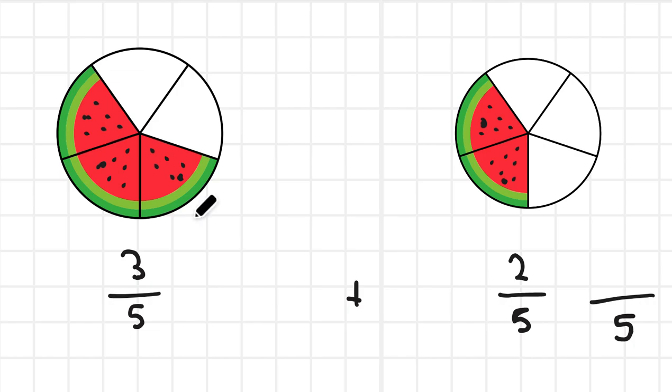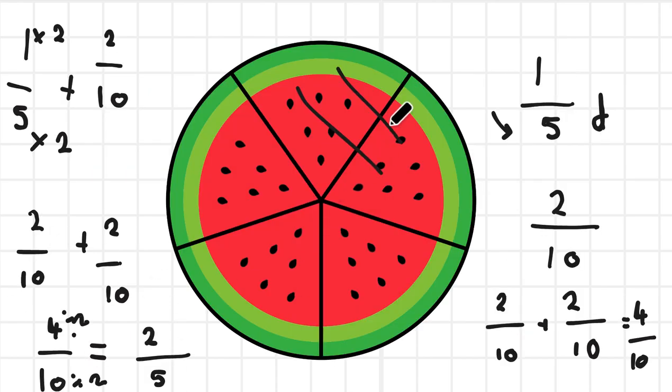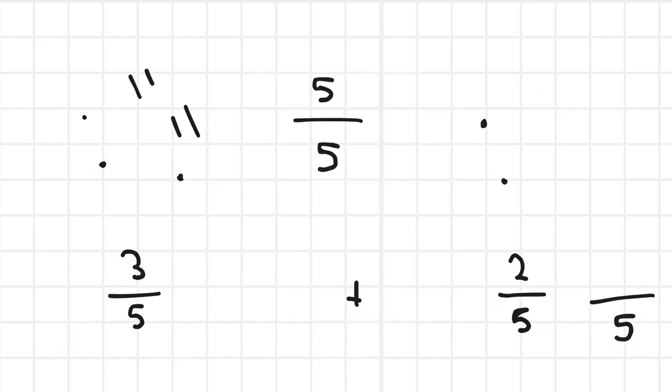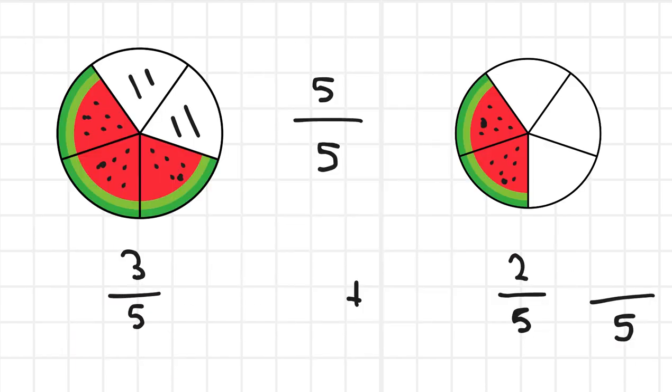And then we add them together, and we have two fifths and three fifths, and that makes five fifths. Now as we know, five fifths is one whole. So we go back to here again, and we can see that five fifths—one, two, three, four, five—makes one whole watermelon.